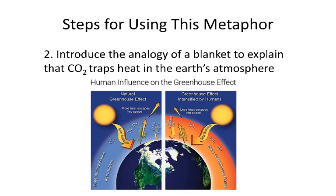The second thing you want to do when using this metaphor is to introduce the analogy of the blanket. A blanket is something that everyone's familiar with, so you can use that analogy to explain that the carbon dioxide gases being emitted are creating a really thick blanket around the Earth that traps heat in the atmosphere — using something people can relate to, to convey the idea that we're trapping heat and making the Earth warmer.